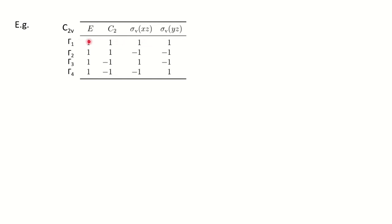For the first irreducible representation: it is one-dimensional so symbol A or B; then we look at the principal axis C2 — character is plus one, so symbol A; then the vertical plane — character is plus one, so subscript 1 will be given, giving A1. For the second irreducible representation: one-dimensional, C2 is plus one so it is A, and the vertical plane is minus one, so it is A2.